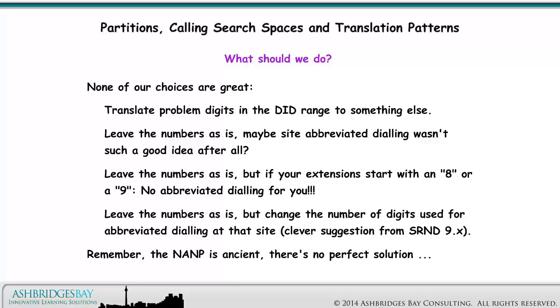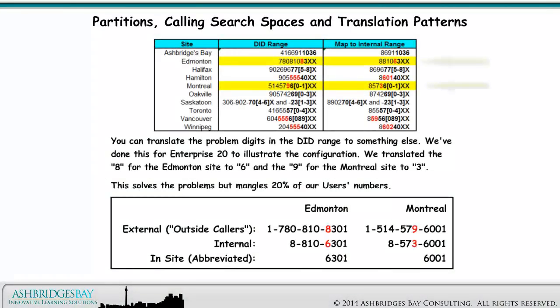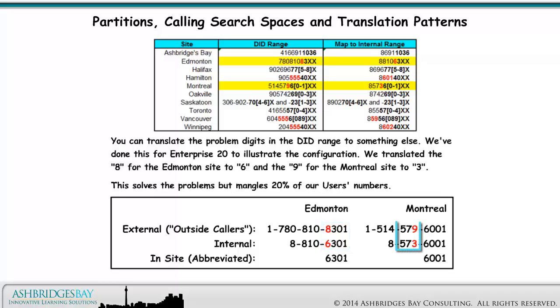Remember, the NANP is ancient. There's no perfect solution. You can translate the problem digits in the DID range to something else. We've done this for Enterprise 20 to illustrate the configuration. We translated the 8 for the Edmonton site to 6, and the 9 for the Montreal site to 3. This solves the problems, but mangles 20% of our users' numbers.